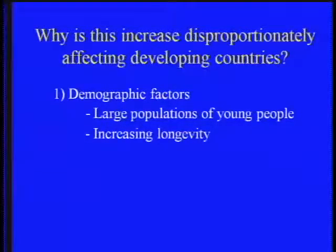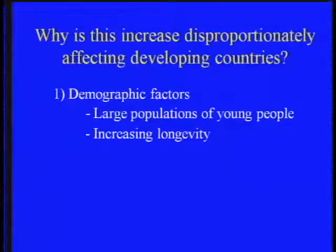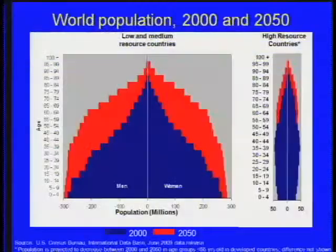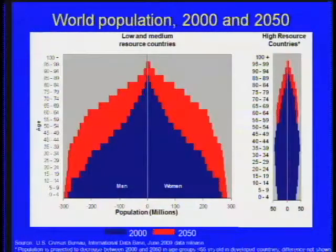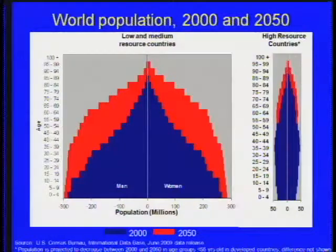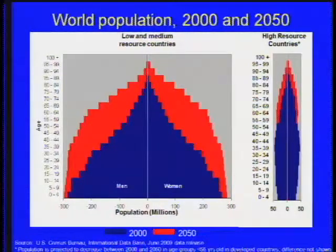The most important factors causing this increase to disproportionately affect developing countries are demographic. These countries have very large populations of young people, and the extension of lifespan is allowing more people to reach the ages where cancer becomes common. This diagram shows the age structure of men and women in low and medium-resource countries in 2000 versus projected for 2050, illustrating how aging will produce far greater absolute numbers of people age 50 and above.